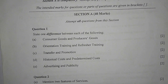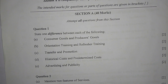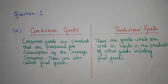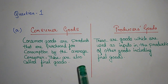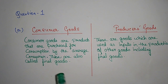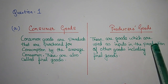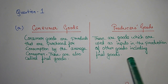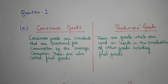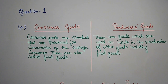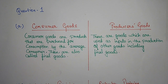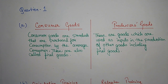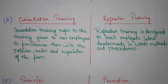Question number one: state one difference between each of the following. Part A — Consumer goods and producer goods. Consumer goods are the products purchased for consumption by the average consumer; these are also called final goods. Producer goods are the goods used as input in the production of other goods, including final goods. Consumer goods satisfy the consumer's needs, while producer goods are purchased by the producer to convert into final goods to maximize profit or earn revenue.